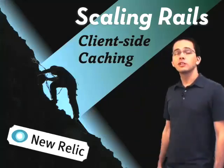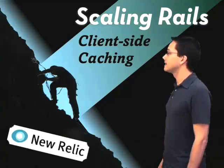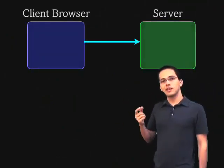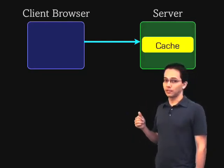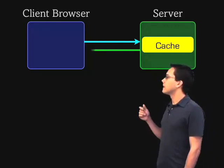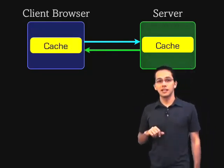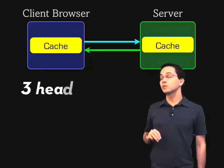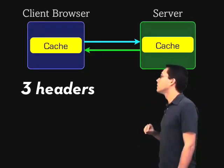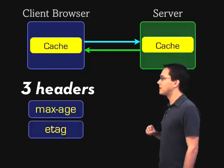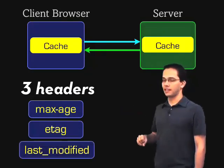In this episode we're going to be focusing on client-side caching. In the previous few episodes we've been primarily focusing on the cache that goes on on the server side of your application. Now we're going to be talking about caching on the client browser side, because there are actually ways that you can control that cache. There are three different ways we're going to be talking about: first, the max-age header, then the e-tag header, and lastly the last-modified header.